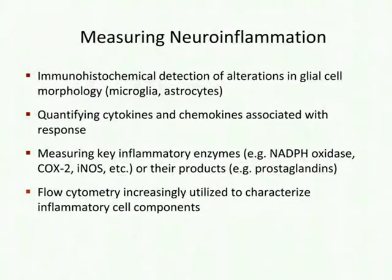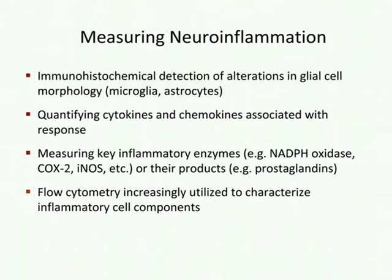There are many different ways to measure neuroinflammation. One can use immunohistochemical detection to look at alterations in glial cell morphology or expression of proteins such as GFAP. One can quantify cytokines and chemokines by ELISA, Westerns, or quantitative PCR. One can also measure key inflammatory enzymes — NADPH oxidase, cyclooxygenase II, and inducible nitric oxide synthase — or their products such as prostaglandins. Finally, flow cytometry has been increasingly utilized to characterize cellular components of inflammatory reactions.